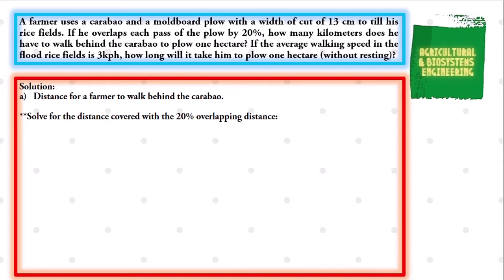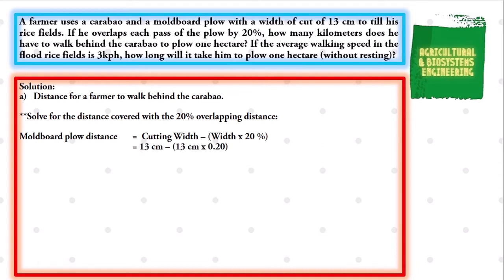But we have to solve for the distance covered by the moldboard plow. The formula is to subtract the width of cut by the 20% overlapping distance. We simply substitute the values and we have: moldboard plow is equal to the cutting width of 13 centimeters minus the cutting width multiplied by 20%. We simply solve and we have 13 centimeters minus 2.6 centimeters. We subtract and we have 10.4 centimeters.